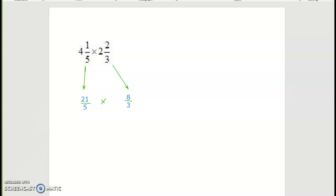And after you've gotten that far, you do need to simplify before you multiply. You're going to divide the 21 and the three by three.